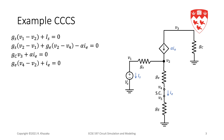KCL at node 4: we have the current in the resistor ge, which is ge(v4 - v2), plus the current in the short circuit which is ie. KCL at node 5: the current in resistor gE is gE(v5), plus the current leaving node 5 through the short circuit, that is minus ie. So we have five KCL equations, but we added two additional variables: is, the current in the voltage source, and ie, the current in the short circuit.